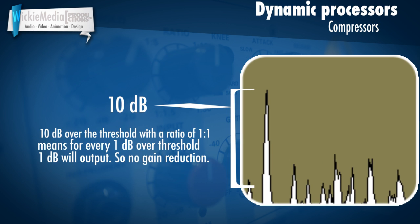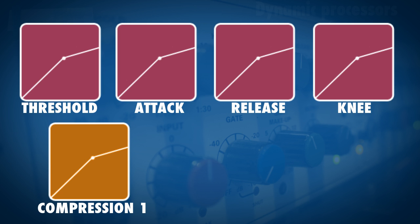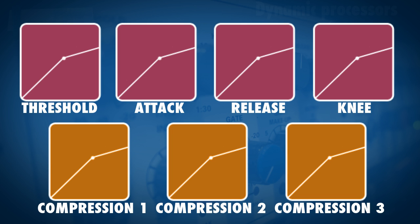If we have a ratio of 1 to 1, that means the compressor is neutral and it won't compress at all, because for every 1 dB over the threshold 1 dB will output — so that's equal. Check out these other quick tips for compression if you want to know more, and check out the advanced compression tutorials right here if you're interested in knowing more about compressors. Thanks for watching.